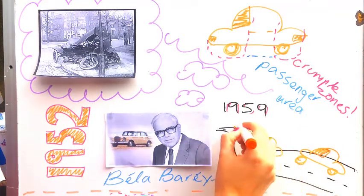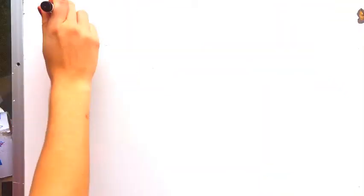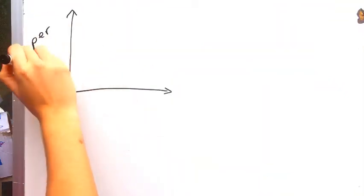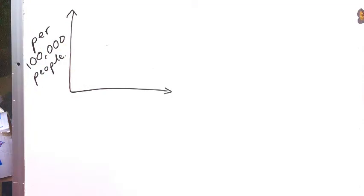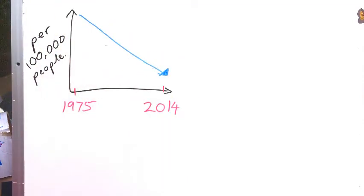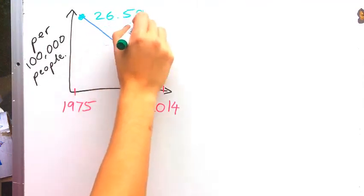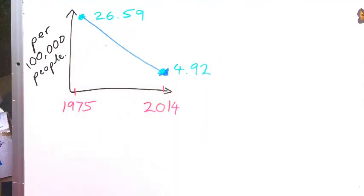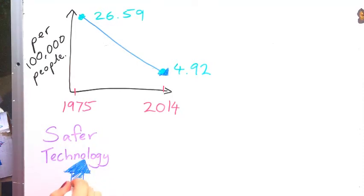They rapidly grew to become a common accessory on all cars. Since 1975, road fatalities in Australia have decreased from 26.59 per 100,000 people to 4.92 in 2014 due to the refined designs of crumple zones along with other safety features. Increased safety technology such as crumple zones is directly related to a decrease in mortality rates.